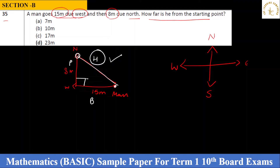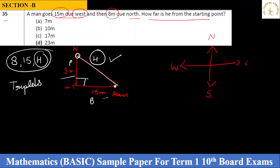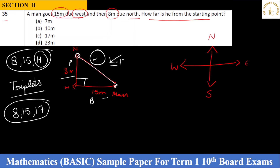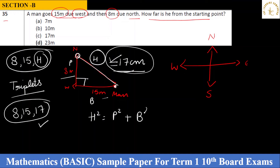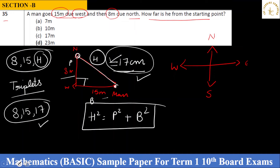Using Pythagoras: perpendicular = 8, base = 15. Recognising the Pythagorean triplet 8–15–17, the hypotenuse = 17. So the man is 17 metres from the starting point. The answer is option C — 17 metres. You could also apply the Pythagorean formula directly. It's good to memorise 5–6 Pythagorean triplets for quick solving.